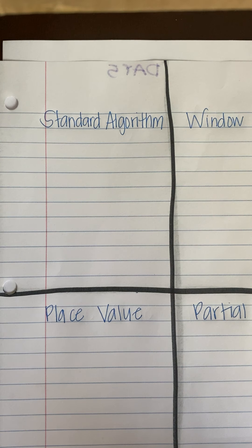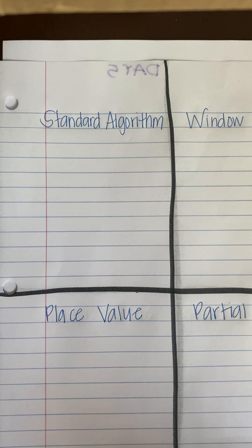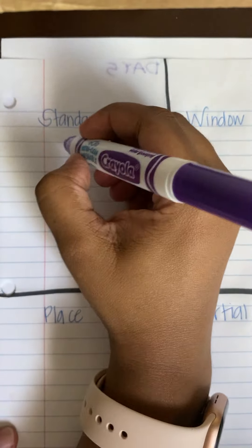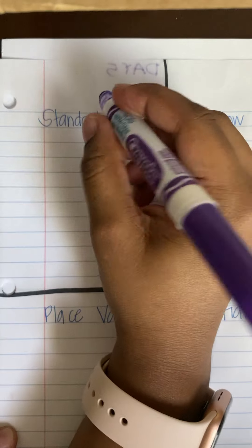Michelle ordered 42 bags of soil for her garden. Each bag weighed 25 pounds. How many pounds of soil are there in all? All right, so we have two factors today. We have 42 times 25.